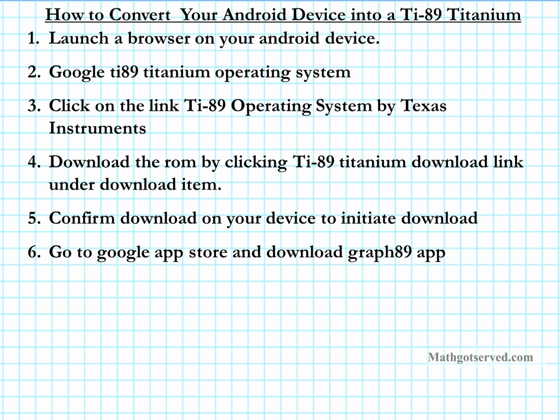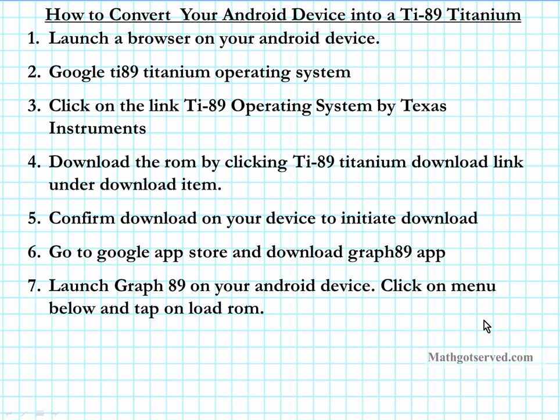It's a free app, so just download it. After you download and install the app, open the Graph-89 app from your app menu on your Android device. As soon as you open it, it's going to show you information concerning copyright — that you should have a TI-89 calculator in order to make use of the ROM you just downloaded. Then tap on the menu bar at the bottom of the page — the black bar at the bottom of your Android device with the three white dots.